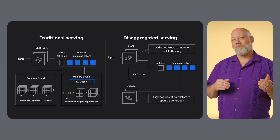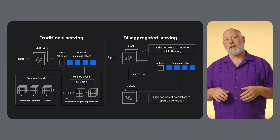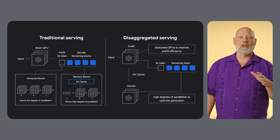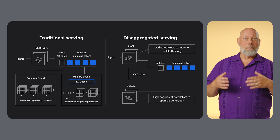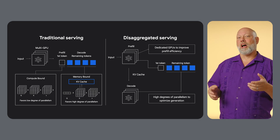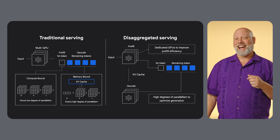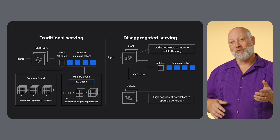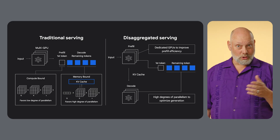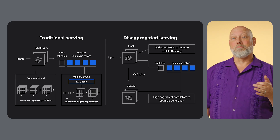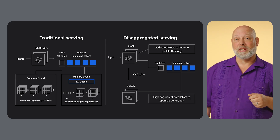Or you can increase the size of the KV and prefix caches, which usually requires breaking the model up. One pattern we're seeing more often is disaggregated serving, which breaks different parts of the model across different classes of accelerators. This can make response times much faster while decreasing costs and increasing availability. Any of these can be aided by serving the model with the vLLM framework, which supports paged attention, prefix caching, and multi-host and disaggregated serving.